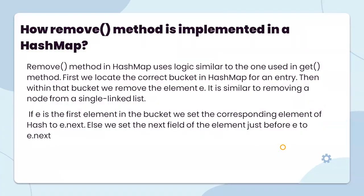How is the remove method implemented in HashMap? The remove method in HashMap uses logic similar to the get method. First, we locate the correct bucket in the HashMap. Then within that bucket we remove the element. It is similar to removing a node from a singly linked list. If A is the first element in the bucket, we set the corresponding element of the hash table to E dot next; else we set the next field of the element just before E to E dot next.